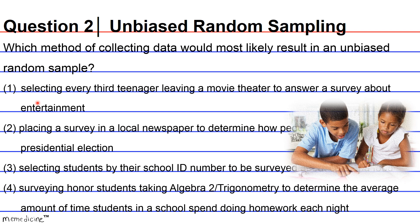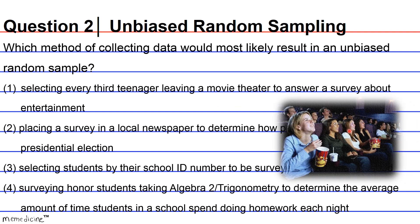Answer choice 1: selecting every third person should get a random sample of people who went to that movie, but those people may not be representative of everyone in the target population at large, and this is the definition of bias. The definition of bias in sampling is when the sample — the selected few — are not representative of the total larger population. So this is probably not a good way to get a representative sample, because this is a form of undercoverage bias — you're restricting the population to teens who actually like entertainment in the form of movies. So it's a no for answer choice 1.